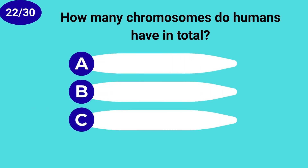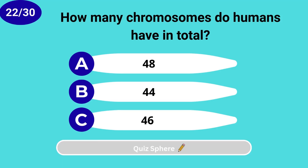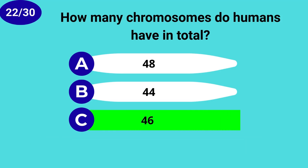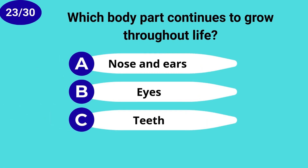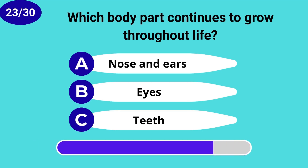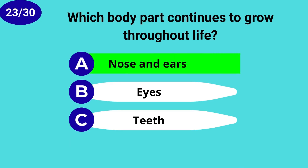How many chromosomes do humans have in total? Forty-six. Which body part continues to grow throughout life? Nose and ears.